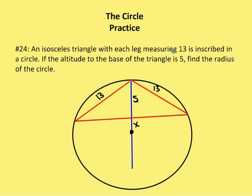All right, an isosceles triangle with each leg measuring 13 is inscribed in a circle. If the altitude to the base of the triangle is 5, so we'll say this is A, B, and C, find the radius of the circle. So we're going to say circle O, and we're going to say this is P, and I'm going to say P to O is going to be X.